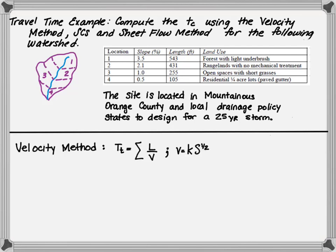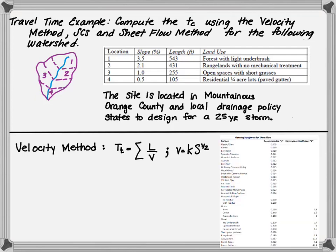So let's first use the velocity method. The velocity method tells you to find the total travel time, sum the quantity of the length divided by the velocity, where the velocity is determined as a constant K times the slope to the 1 half. To find the value of K, please refer to the learning management system where I provided you a handout showing you the roughnesses. What you'll notice is that there are descriptions such as forest or light underbrush and that has a K value of 1.